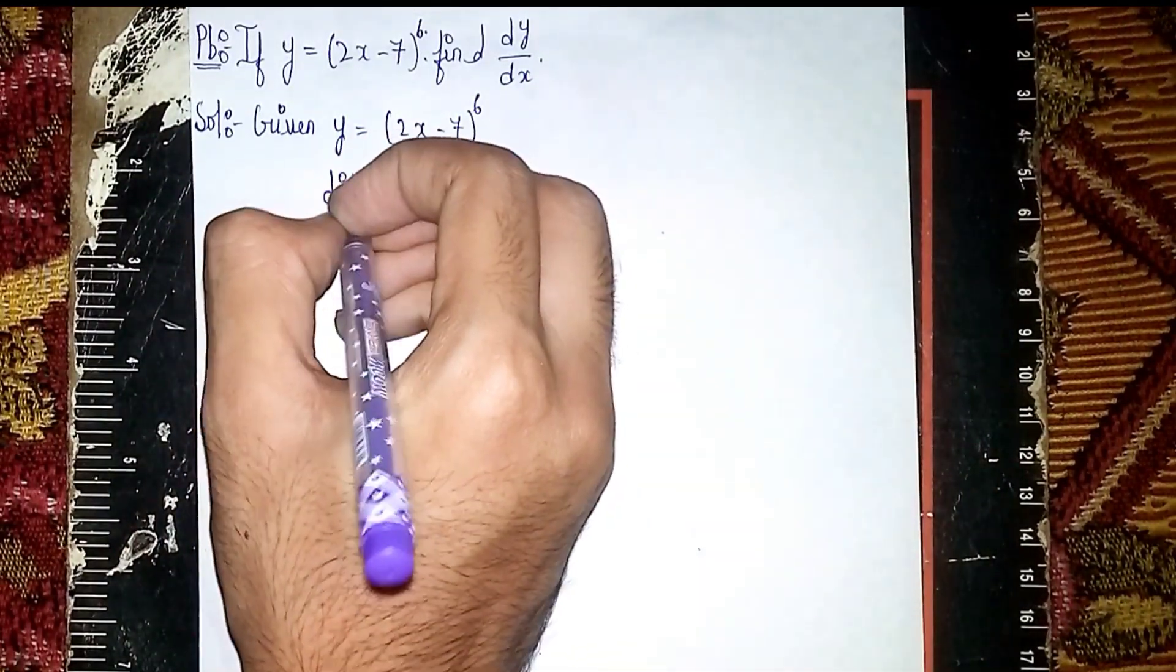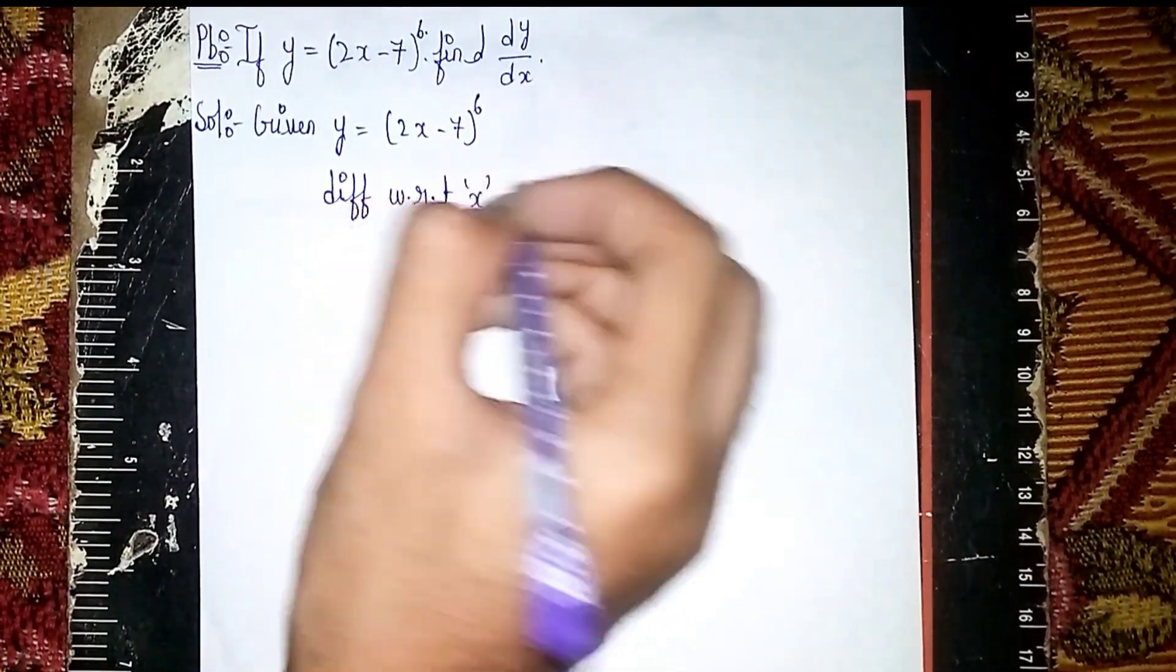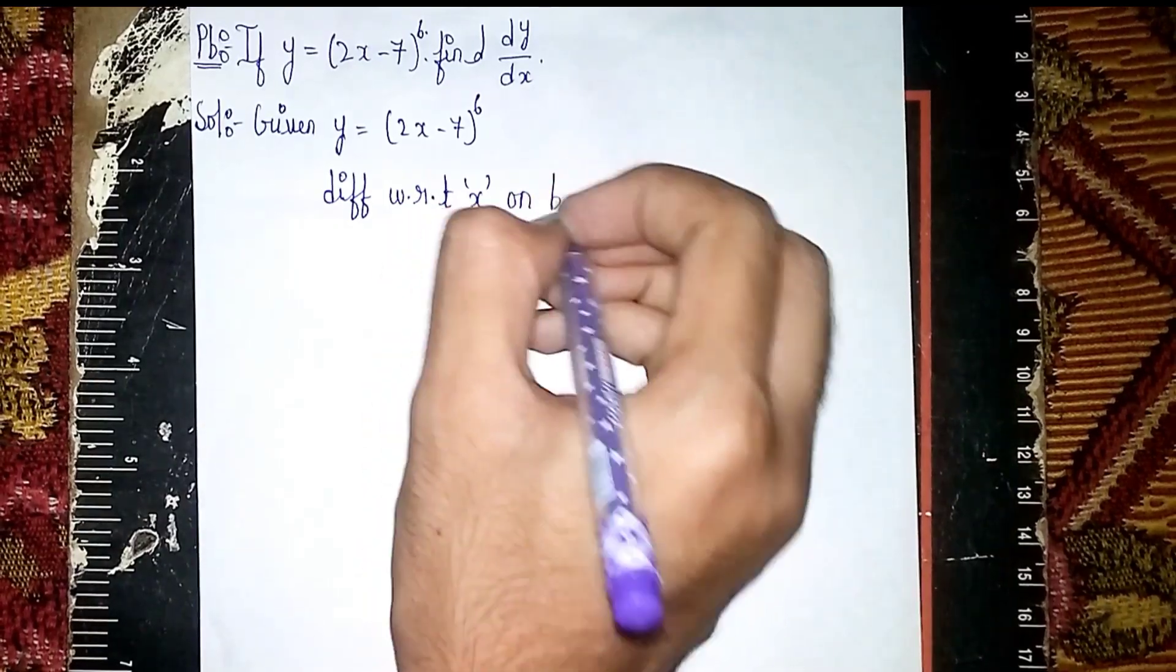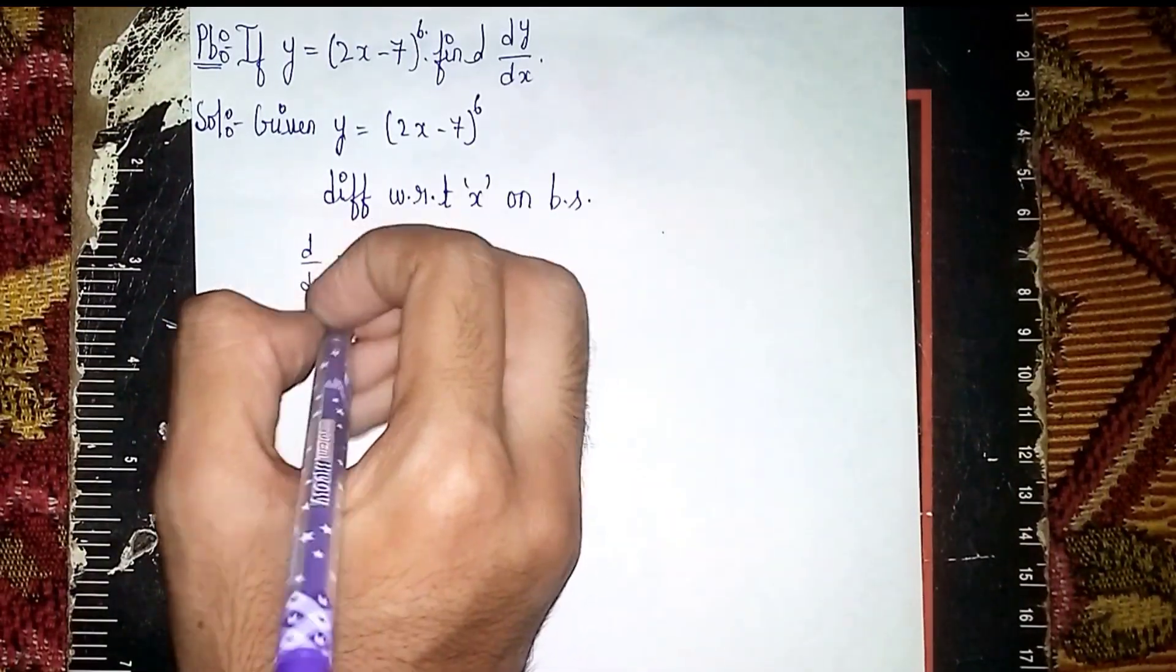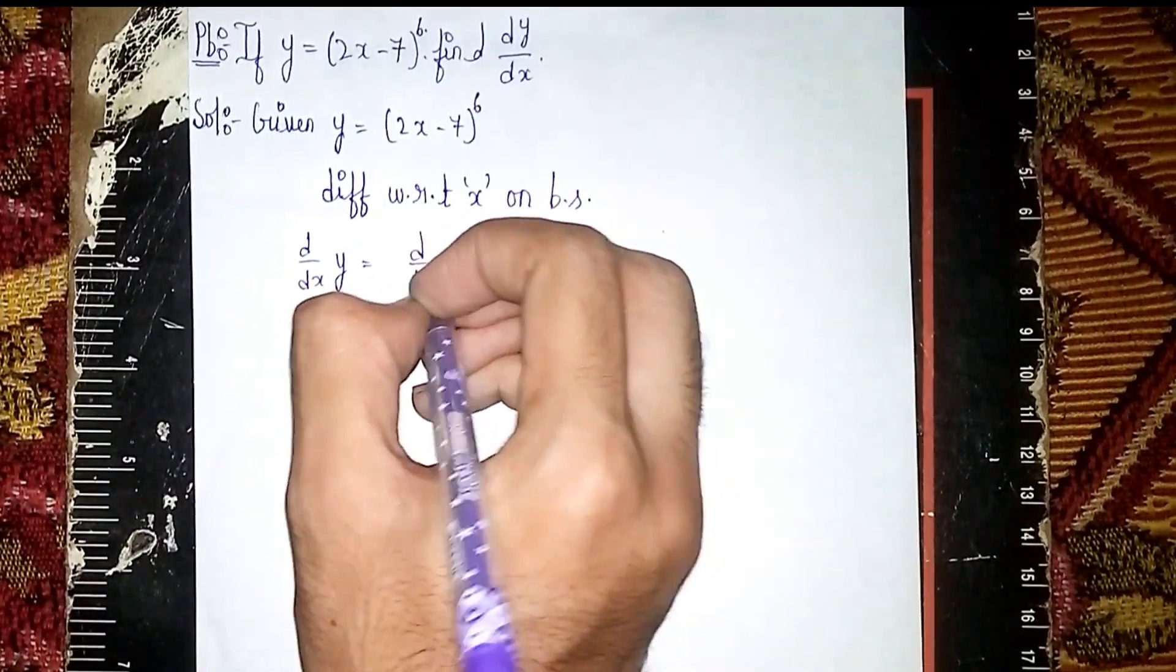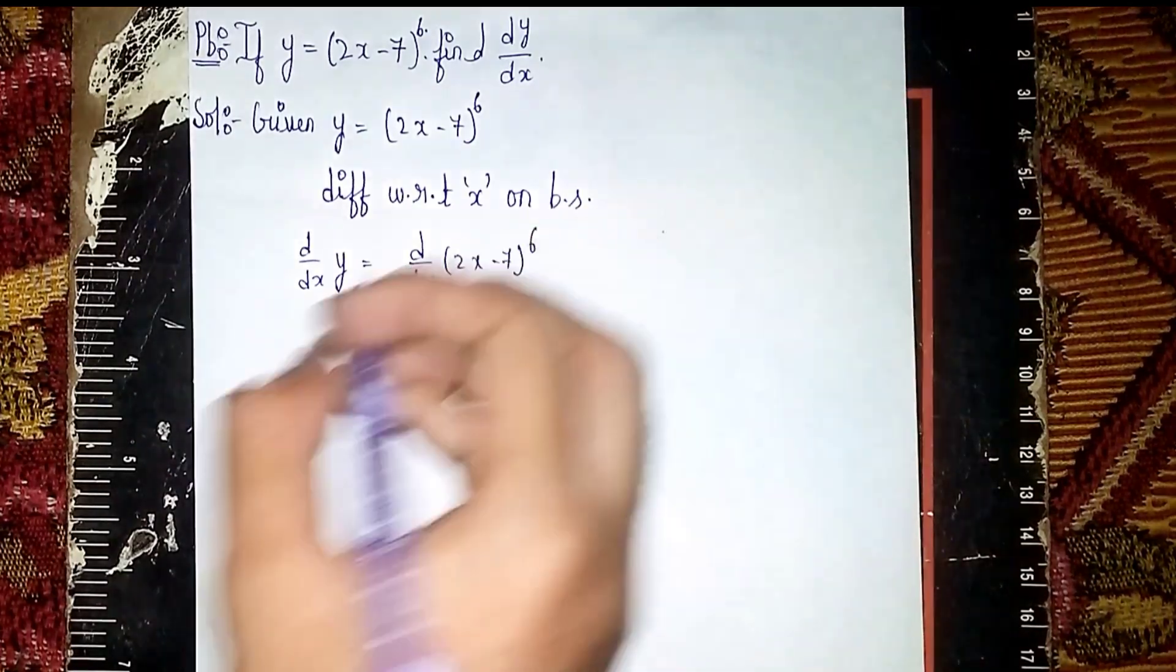Differentiate with respect to x on both sides. So it becomes d/dx of y is equal to d/dx of (2x - 7)^6.